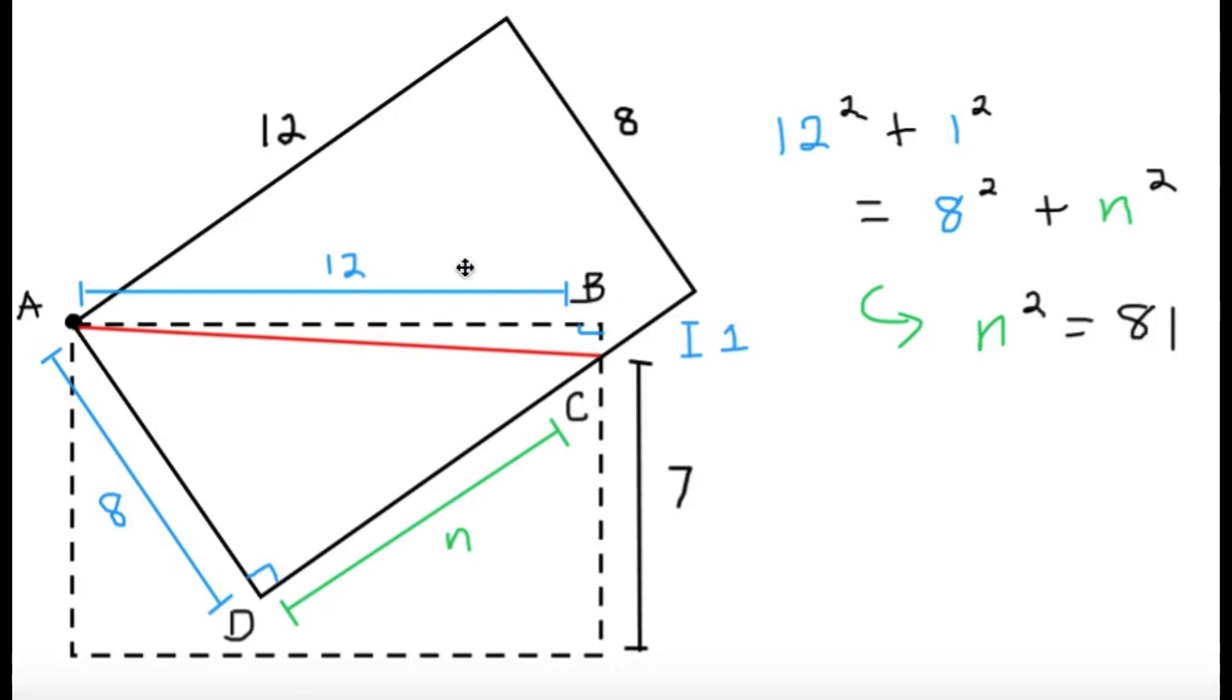Now how did I get these values? The 12, well since I'm just rotating the rectangle here, the dimensions of the rectangle remain the same. So here I would get AB equals 12 because that's one of the original dimensions of the rectangle.